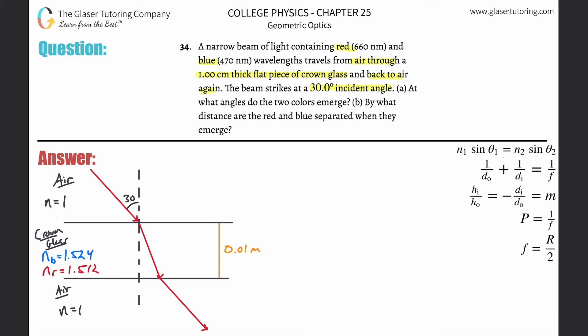What angles do the two colors emerge? Check out number 15, I think, maybe was it 16, a very similar problem. So it turns out that for letter A, the two colors will emerge at the same exact angle of incidence.